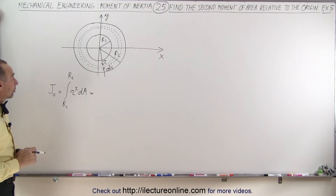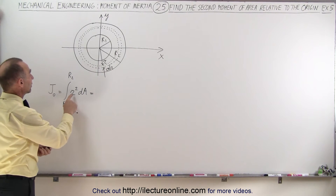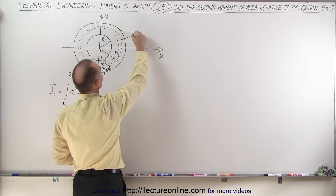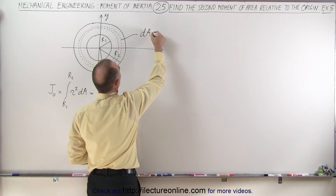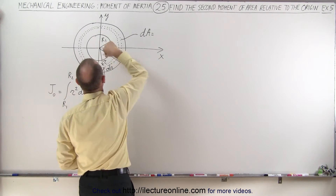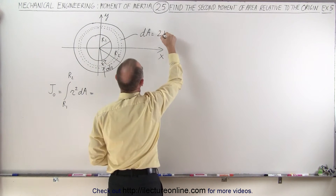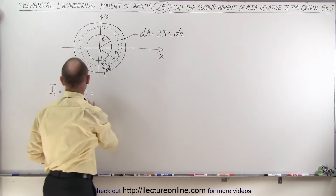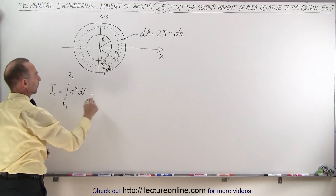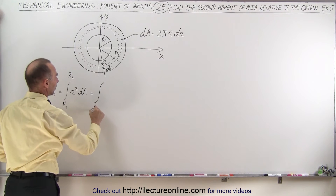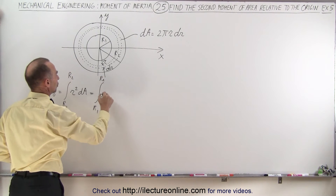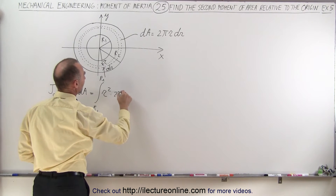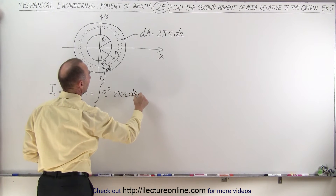That's an easy integral to set up, except we cannot yet integrate r squared dA — we need to figure out what dA is equal to. dA is equal to the circumference times the thickness, which is 2πr times dr. So we replace dA with that, and this becomes the integral from r1 to r2 of r squared times 2πr dr.